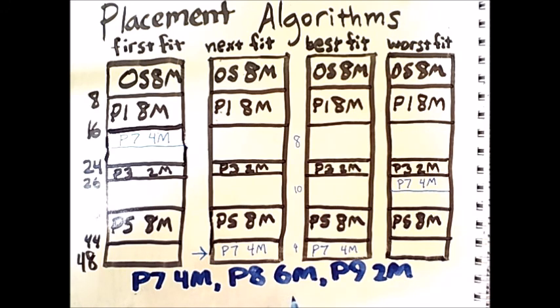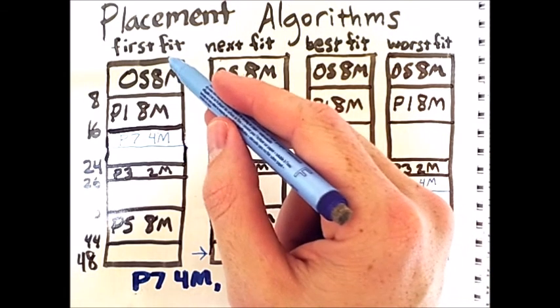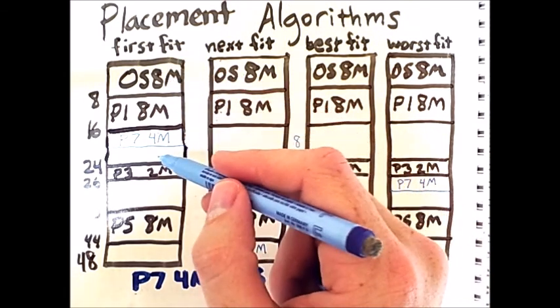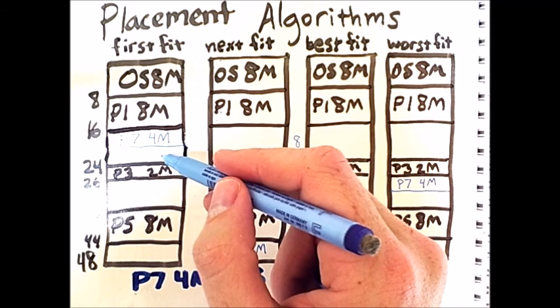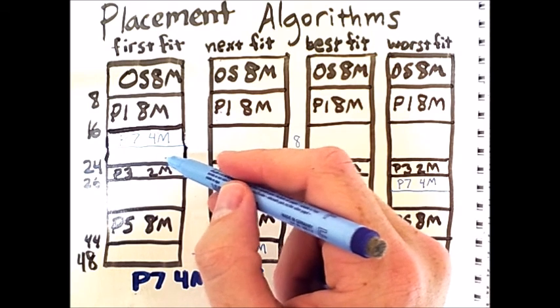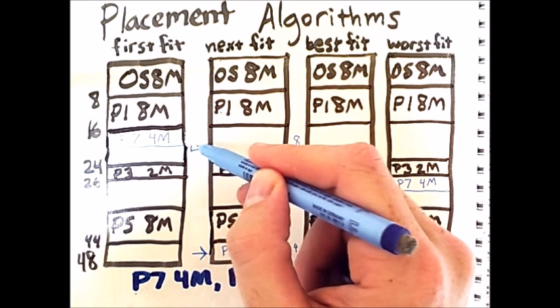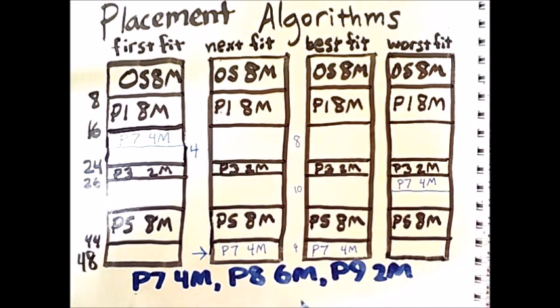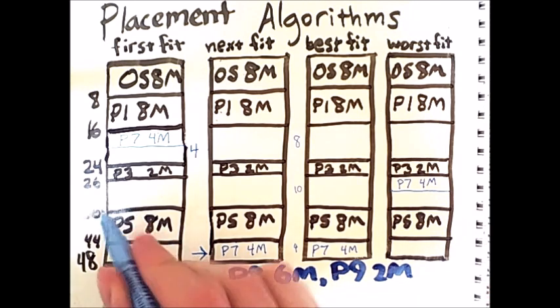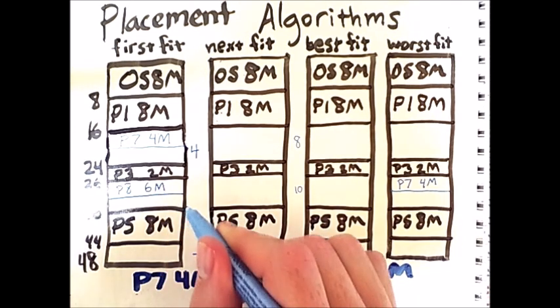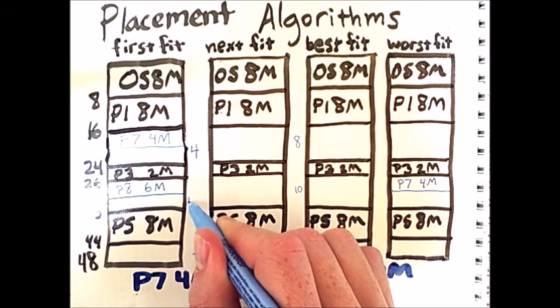The next process is process 8, which requests 6 megabytes. As before, first fit goes from the beginning through memory. This is the first empty chunk that it encounters, but there are only 4 free megabytes here. So we cannot place this 6 megabyte request there. Instead, we must place it here, which leaves 4 empty megabytes left over.